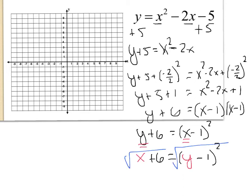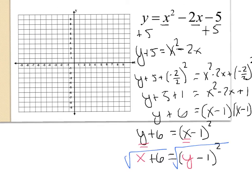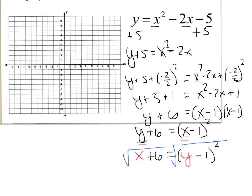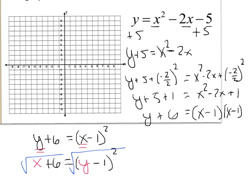And then I'm going to take the square root of both of these guys, and I'm going to start... move that over there. And that's going to equal plus or minus the square root of x plus 6, which is equal to y minus 1.